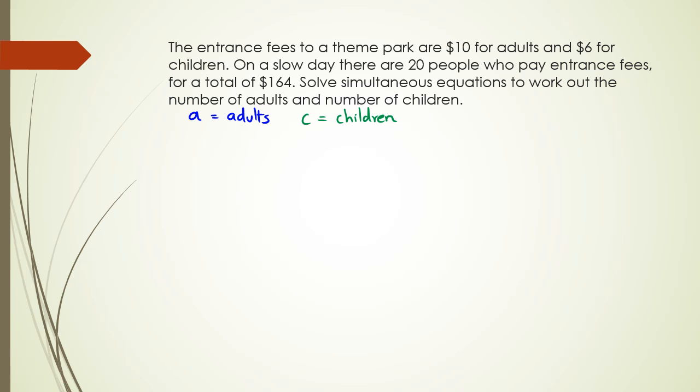So first off, my first equation is look at the money itself. So I've got $10 for adults, $6 for children, and the total money they made was $164. So what I could write is I could have $10 for adults plus $6 for children. And altogether, the money that was spent was $164. That's my first equation.